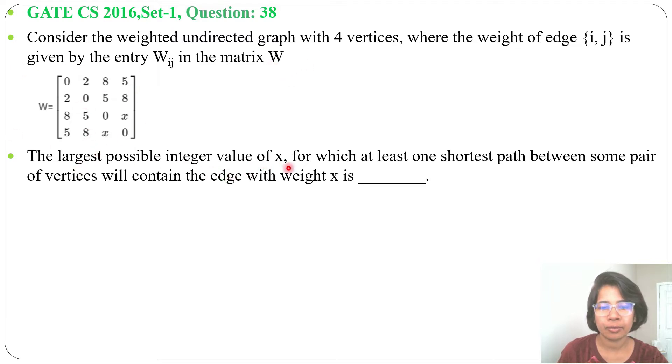The largest possible integer value of x for which at least one shortest path between some pair of vertices will contain the edge with weight x is dash. If we are not understanding the weighted matrix, let me create a graph from this.